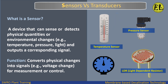What is a sensor? A sensor is a device that can sense or detect physical quantities or environmental changes — for example, temperature, pressure, and light — and outputs a corresponding signal. Its function is to convert physical changes into signals, such as a voltage change, for measurement or control.